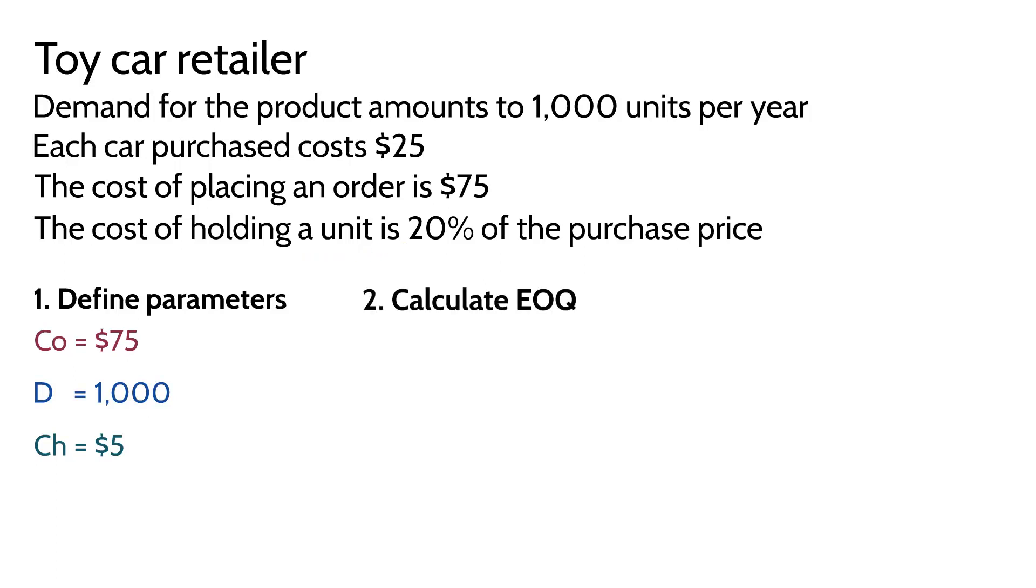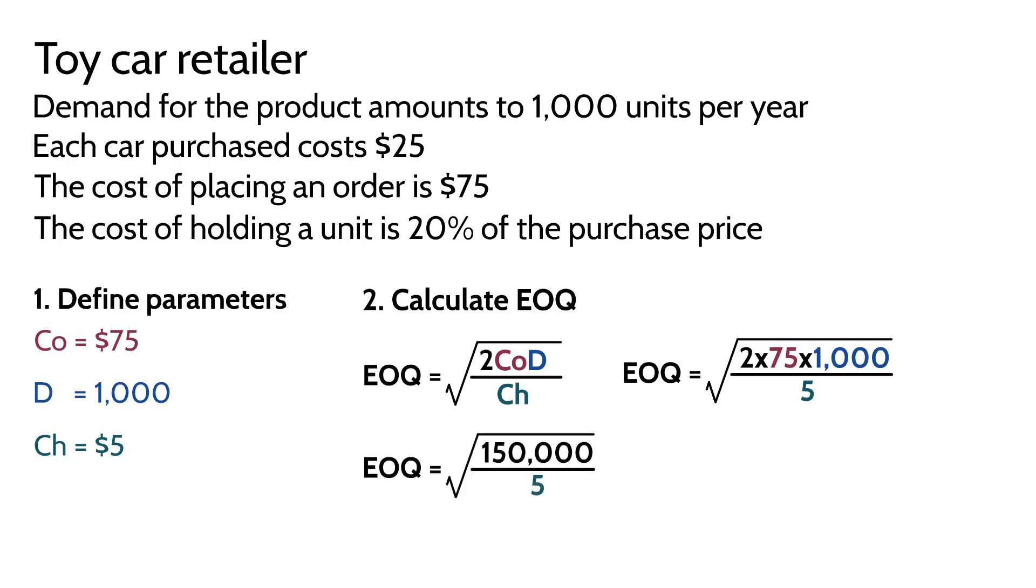Now that we have all the parameters we can apply these figures to the EOQ formula. What we'll find is that the EOQ is equal to the square root of 2 times $75 multiplied by a thousand units divided by the holding cost of $5. If we do the numerator calculation first we'll find that the numerator is 150,000. Divide that by 5 and the EOQ is equal to the square root of 30,000 units. Perform the square root calculation and we'll find that the optimal number of units that should be purchased that will minimise the amount of inventory costs is 173.21 units. Units should be a whole figure because you can't have 0.21 of a car. So it has to be rounded to the nearest whole number which will be of course 173.